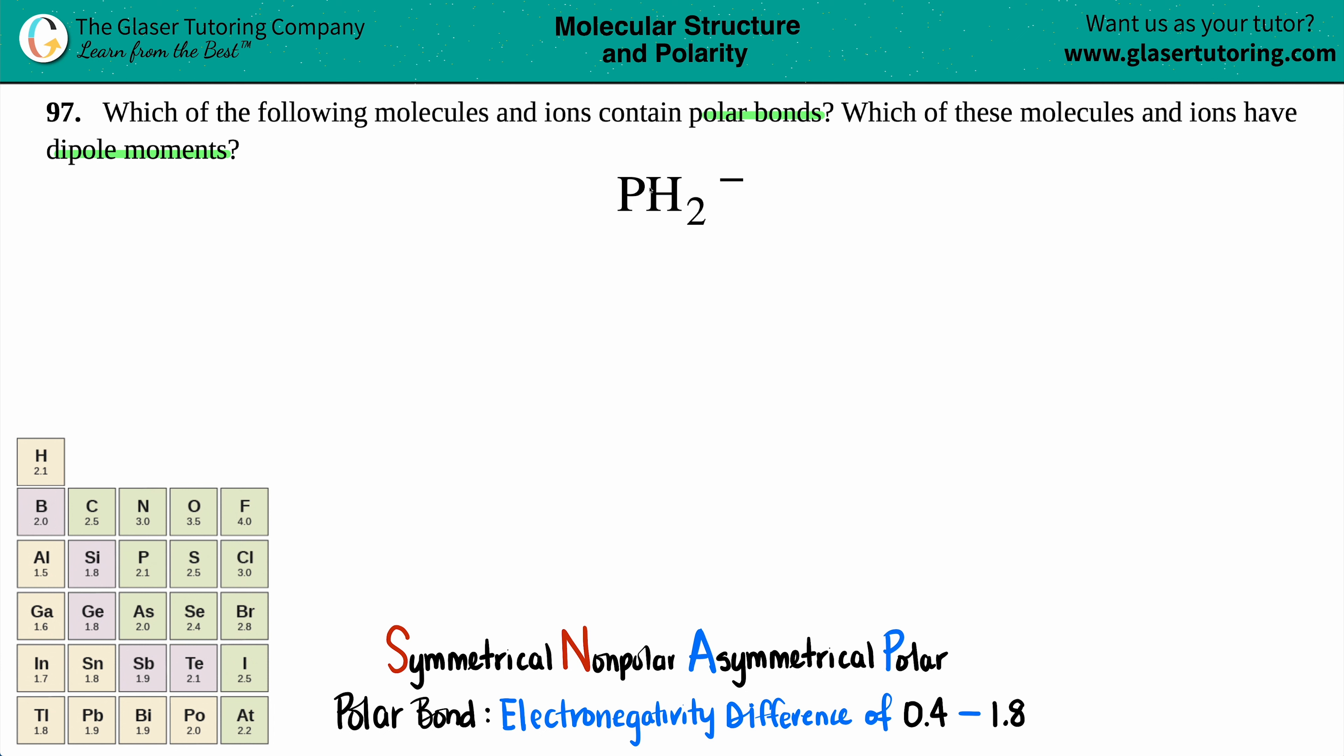We'll start off with the polar bonds. Now, secretly, I mean not secretly, but they're asking you for bonds. But if I'm looking at PH2 minus, do you see any bonds? I don't see any bonds. So the first thing I have to do is I just have to write the bonds. It just makes it so much easier. Just draw the Lewis structure.